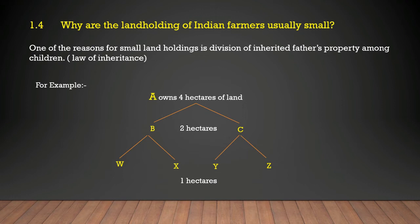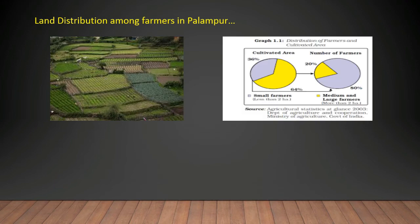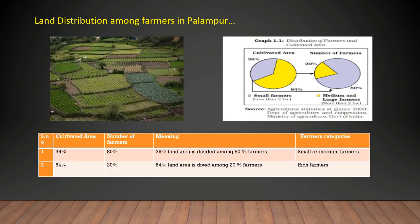Regarding land distribution among farmers in Palampur, graph 1.1 in your book shows that 36 percent of the cultivated area is divided among 80 percent of the farmers — mostly small and medium farmers. Meanwhile, 64 percent of the land area is divided among just 20 percent of the farmers, mostly rich or big farmers. This shows an unequal distribution: rich farmers are fewer but have large land holdings, while medium and small farmers are greater in number but hold less land.